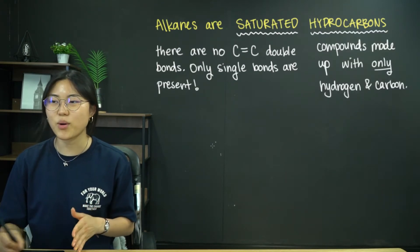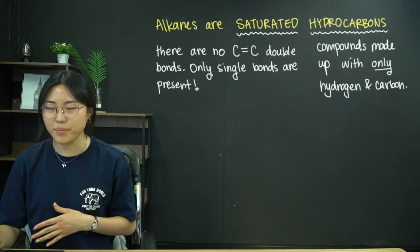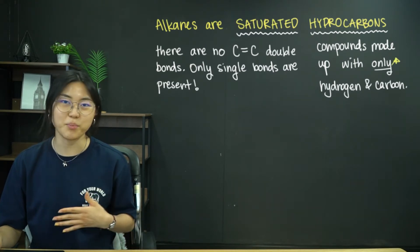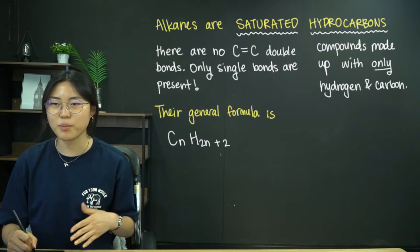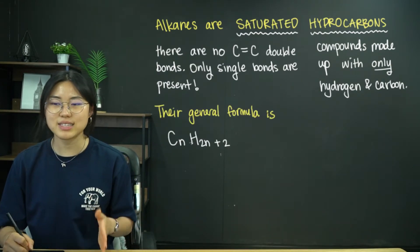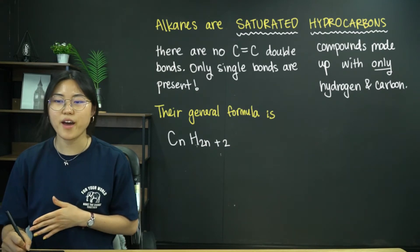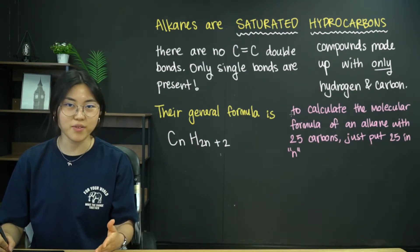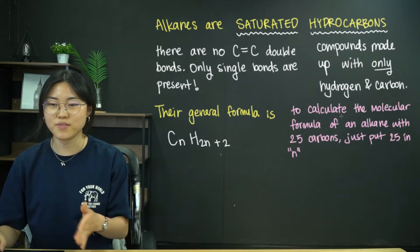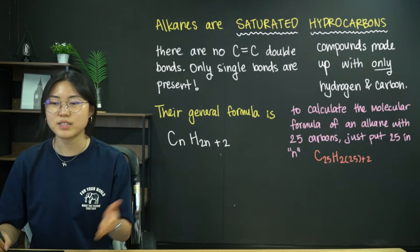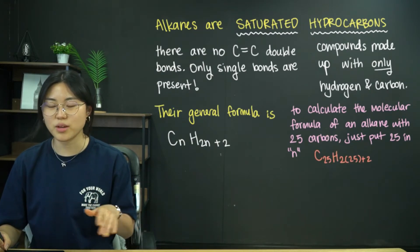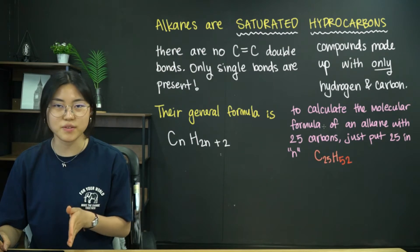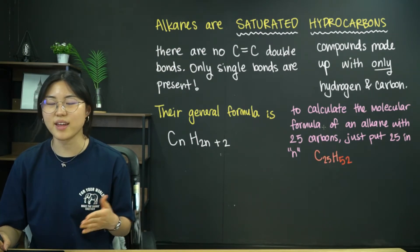Hydrocarbons means this compound is only made up of hydrogen and carbon — only. That word is quite important. And the general formula for alkanes is CnH2n+2. So to calculate the molecular formula of an alkane with 25 carbons, you put 25 into N: you would have C25, and then H is 2 times 25 plus 2, giving you C25H52 as your molecular formula.